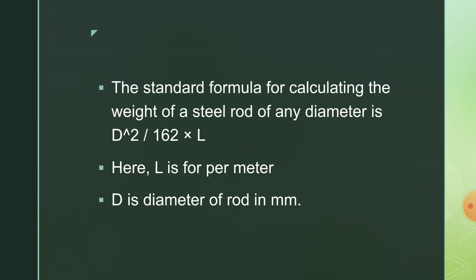The standard formula for calculating the weight of a steel rod of any diameter is D squared upon 162 into L, where D is the diameter of the rod in mm and L is the length per meter. For example, if we have a 12 mm diameter rod: 144 upon 162 into L. Here L can be 5 meter, 10 meter, 12 meter, or any length. Using this we can easily calculate the mass, or weight, of a steel rod.